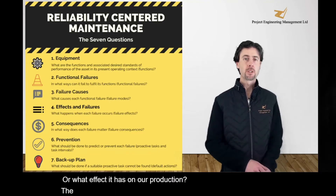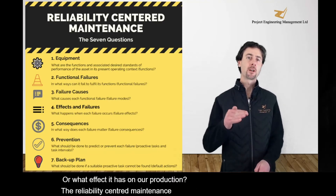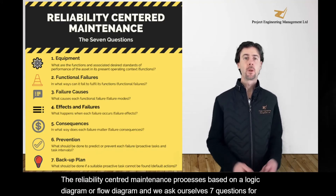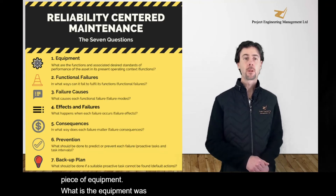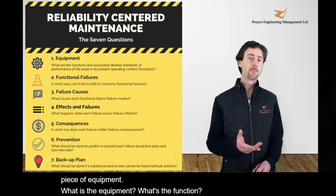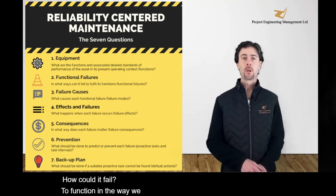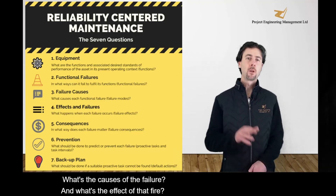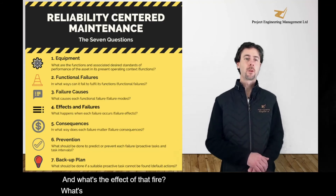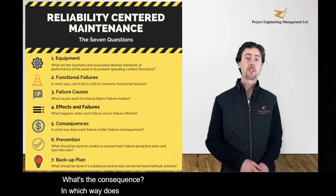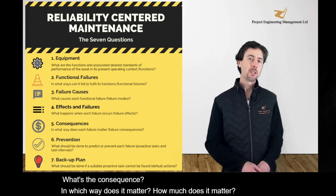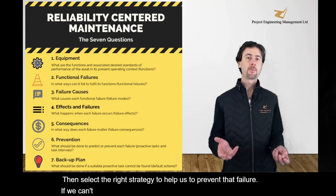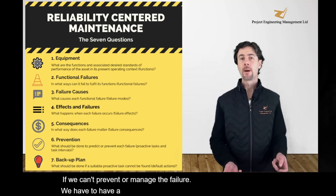The reliability centred maintenance process is based on a logic diagram or flow diagram, and we ask ourselves seven questions for each piece of equipment. What is the equipment? What's the function? How could it fail to function in the way we need it to? What are the causes of the failure? What's the effect of that failure? What's the consequence — in which way does it matter and how much does it matter? Then we select the right strategy to help us prevent that failure. If we can't prevent or manage the failure, we have to have a backup plan, and that may include redesign.